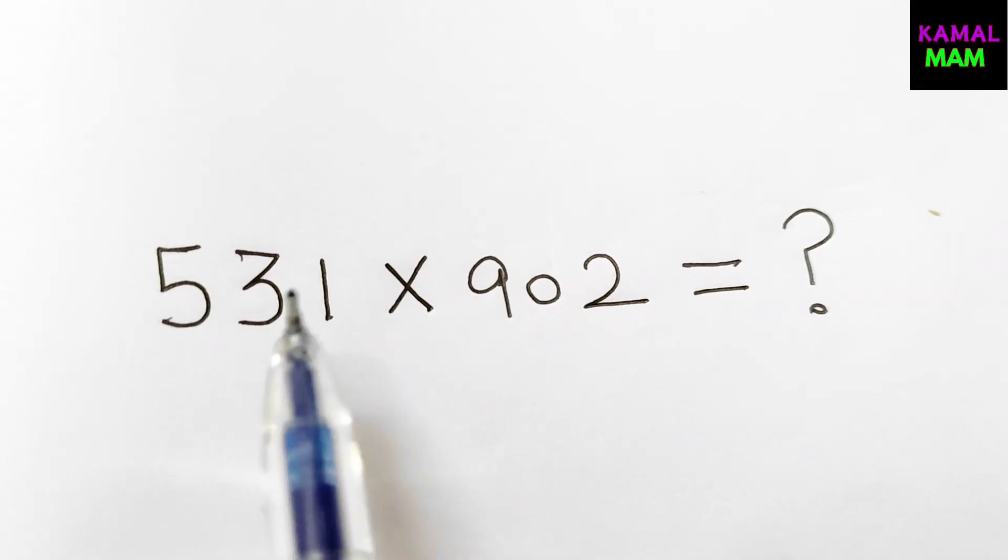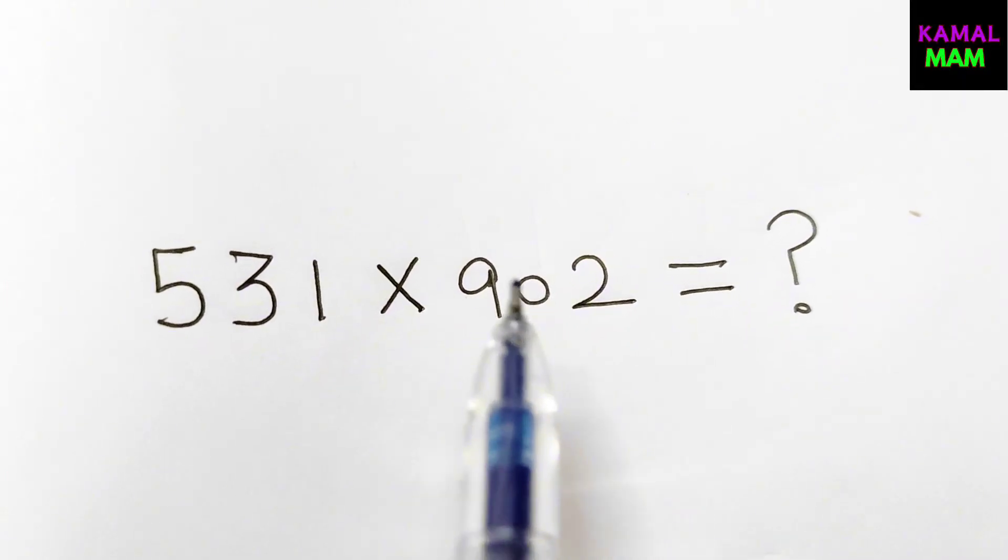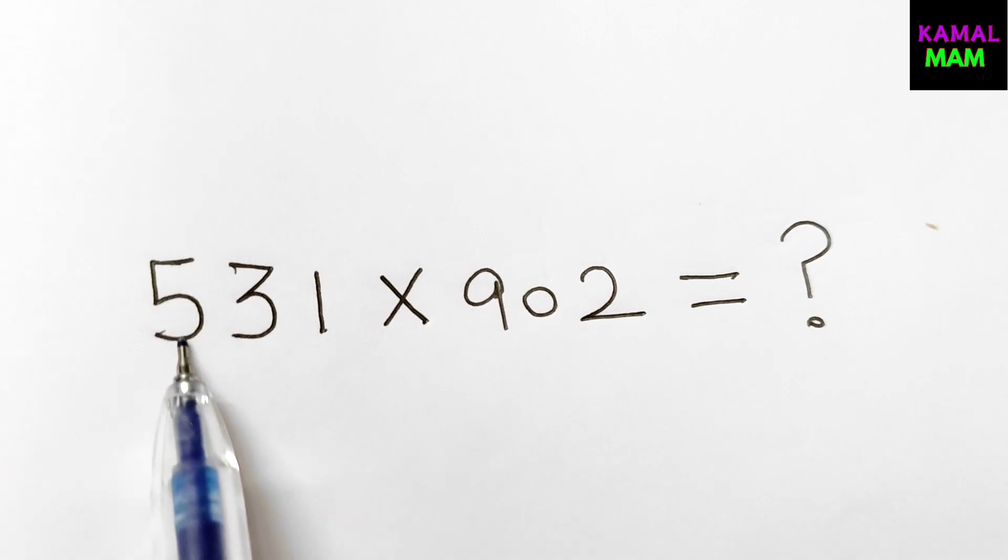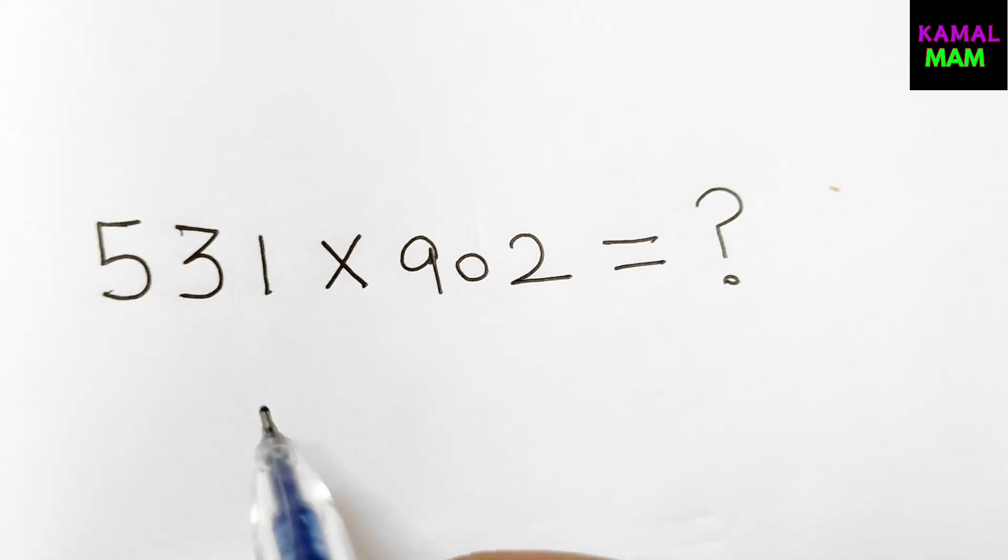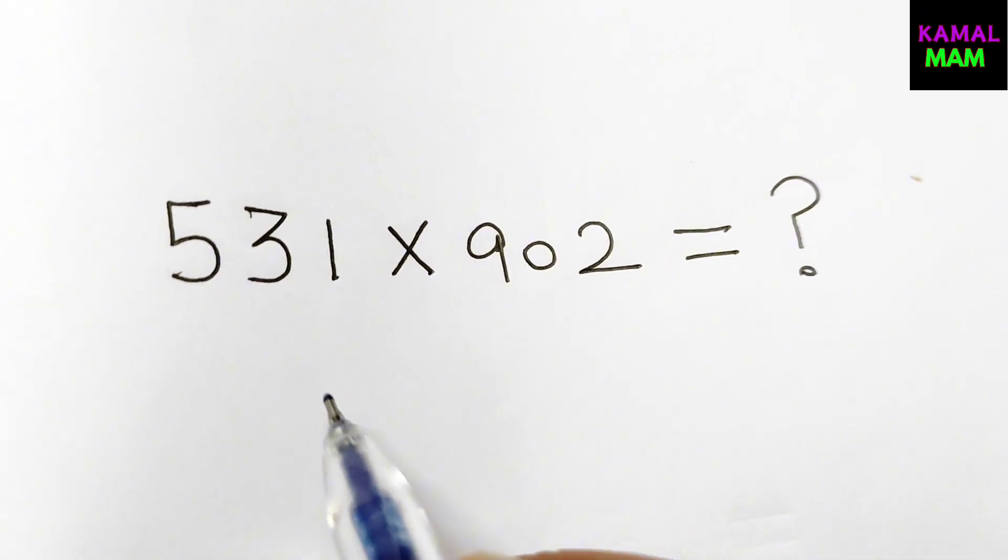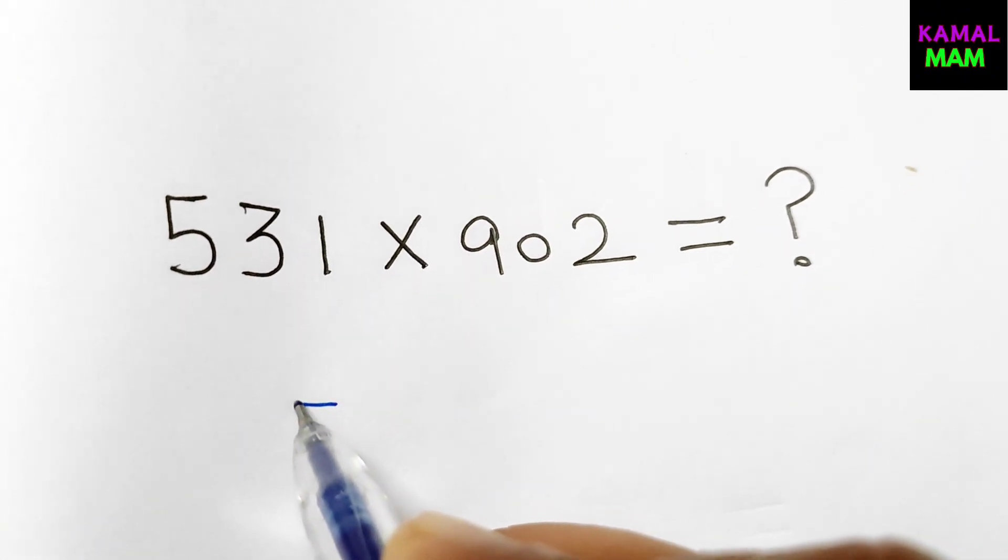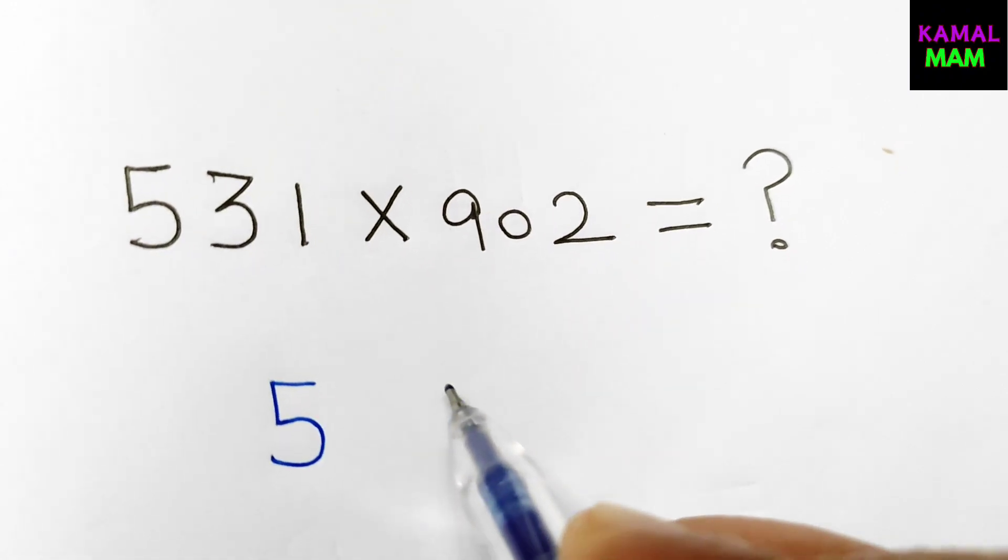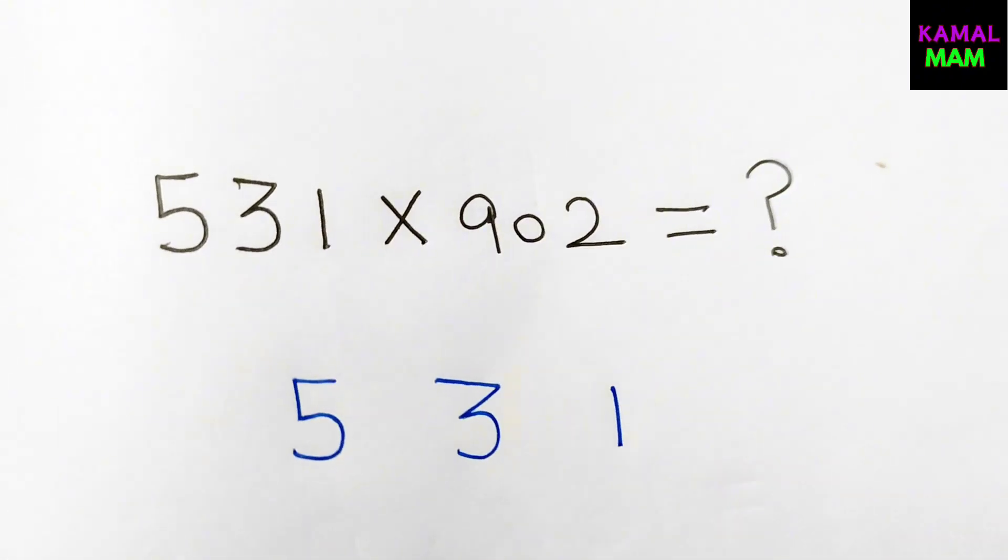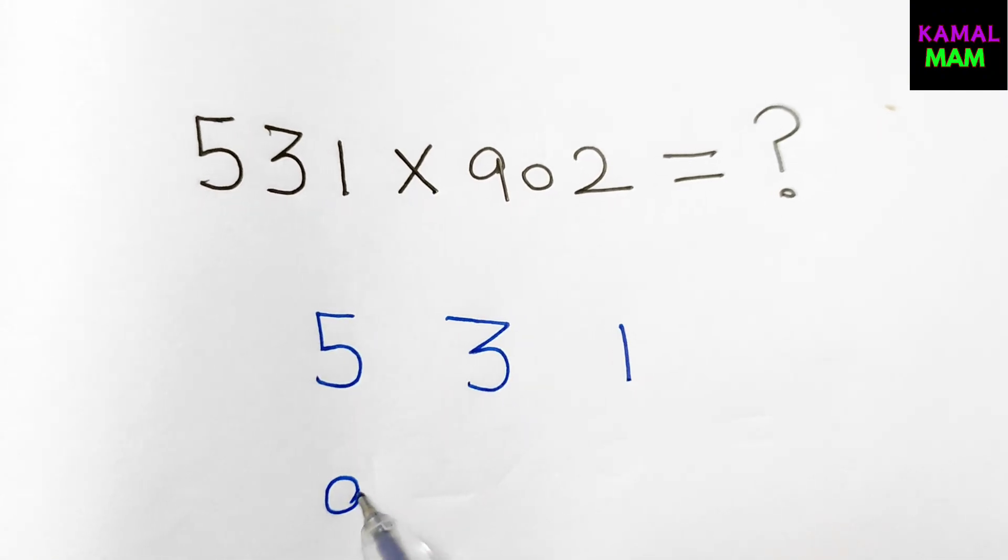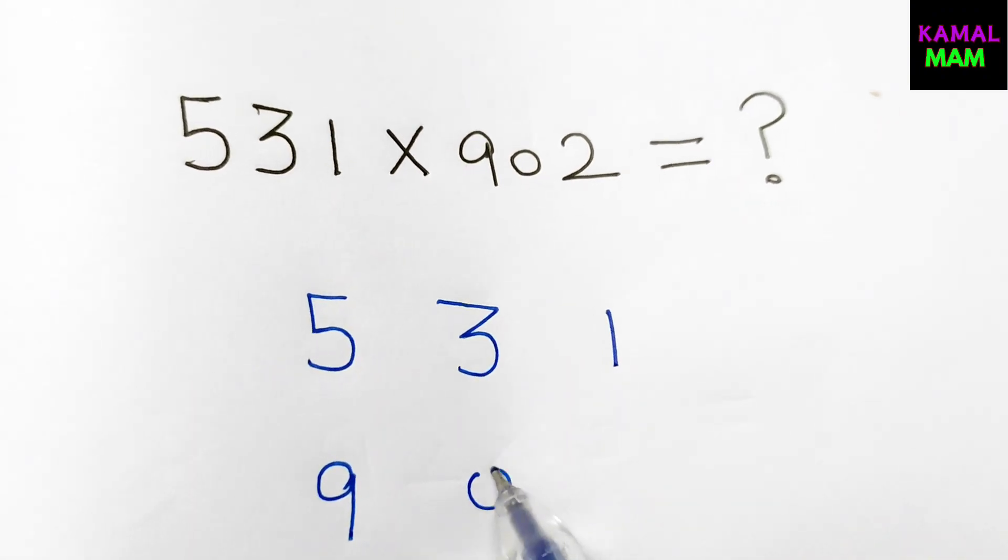I have a super trick to solve 3-digit multiplication. So our question is 531 into 902. So firstly write it down like this: 531 and 902.